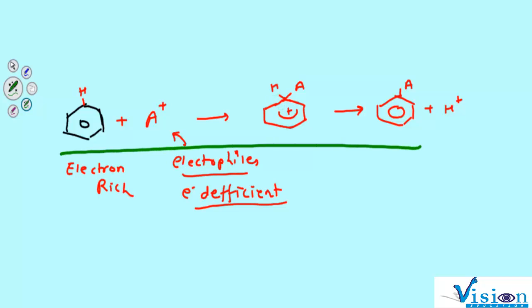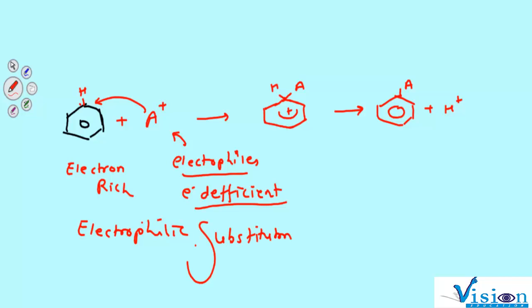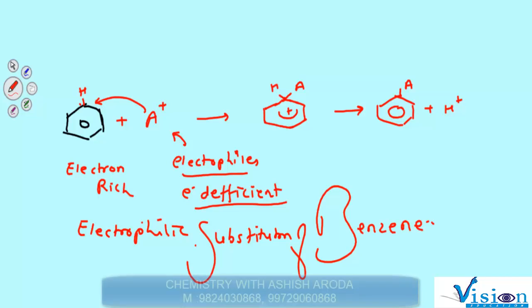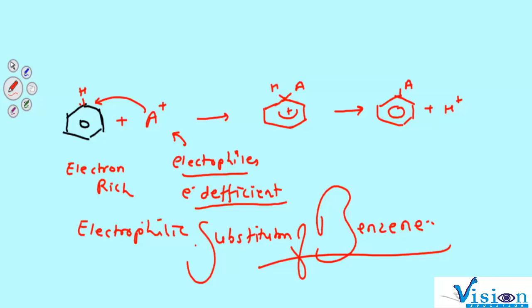This is what we had learned in 11th standard. This is known as the Electrophilic Substitution Reaction of Benzene, and we have learned that earlier. Now we have to continue the concept.